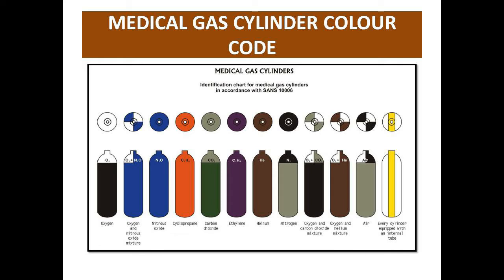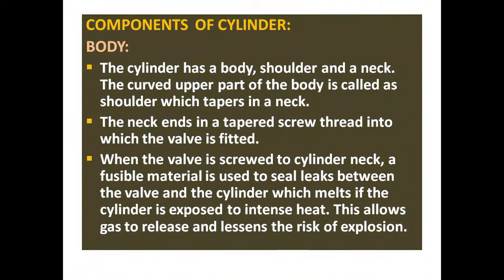Medical gas cylinders can be identified using a color code. The components of a cylinder include the body and valve. The cylinder body has three parts: the body, the shoulder, and the neck. The upper part of the body is curved at the shoulder, and the neck end has a tapered screw thread.